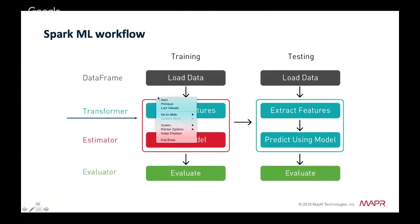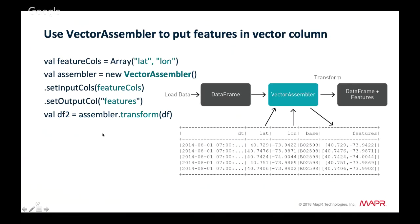To extract features we use a VectorAssembler. We create the VectorAssembler, specify the input columns — latitude and longitude — and specify the output column as the features column. We then call transform on our DataFrame, which returns a DataFrame with that features column ready for machine learning.